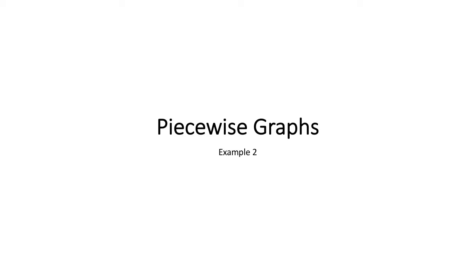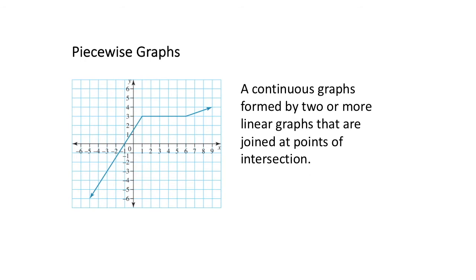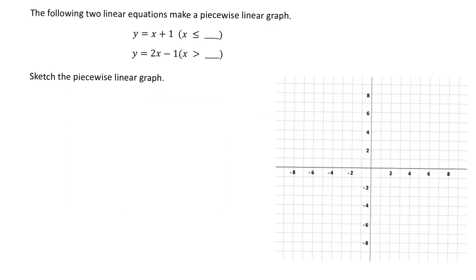This video is going to look at an example of how to construct a piecewise graph. A piecewise graph is a continuous graph formed by two or more linear lines that are joined at points of intersection. In this example, we want to graph two linear equations to make a piecewise linear graph.